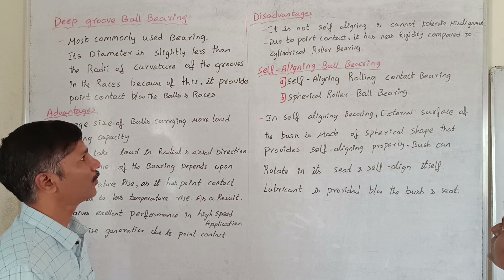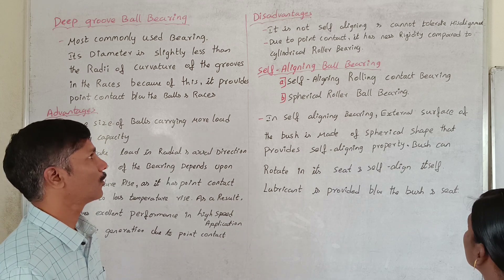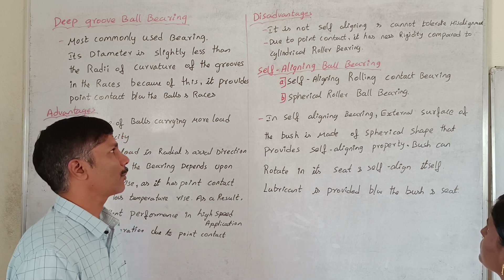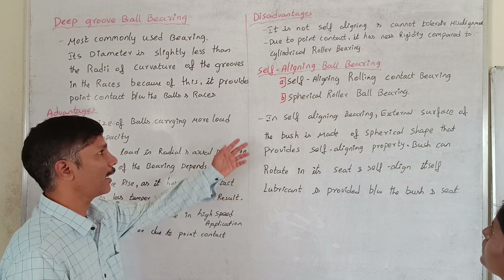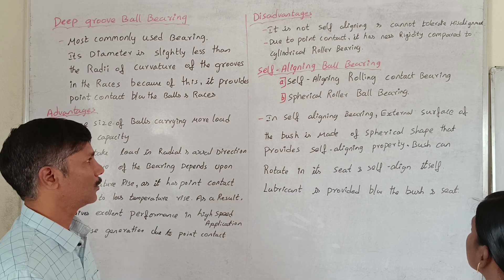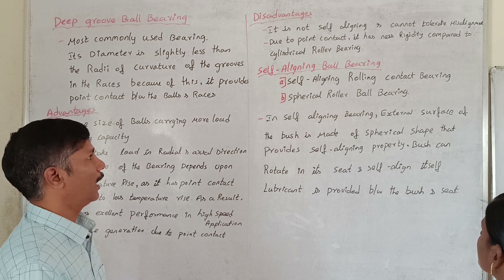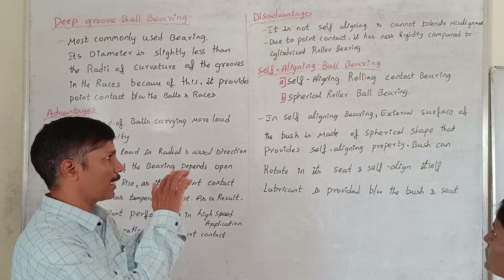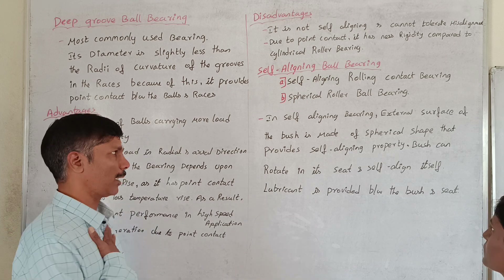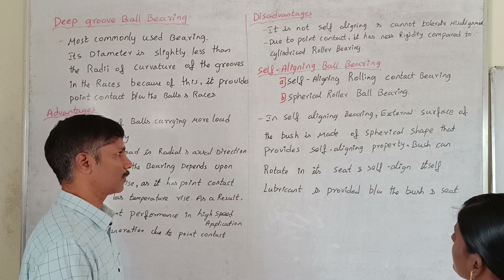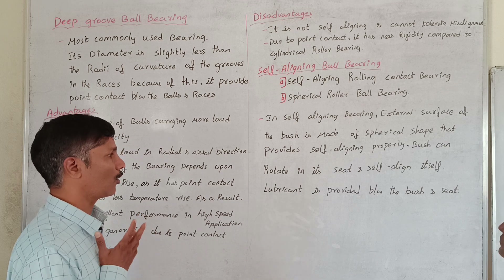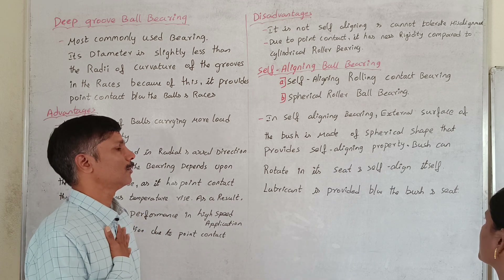Self-aligning ball bearing: it is a self-aligning rolling contact bearing where the bush can rotate in its seat and self-align itself. Lubricant is provided between the bush and the seat.